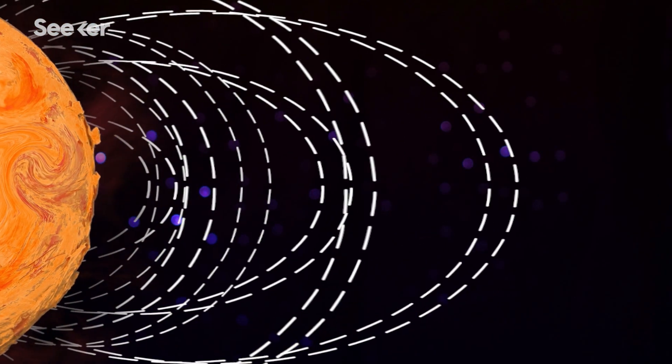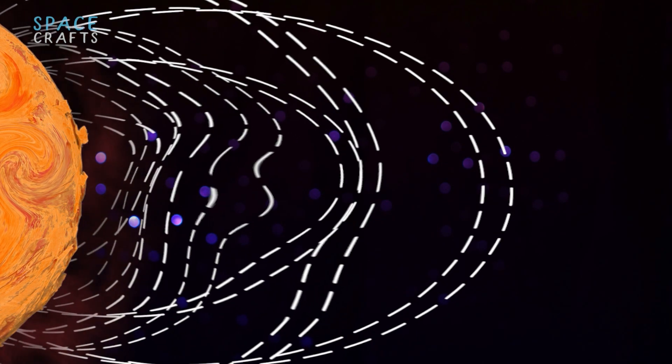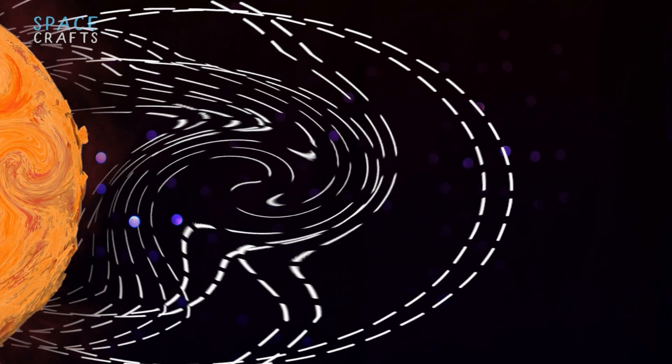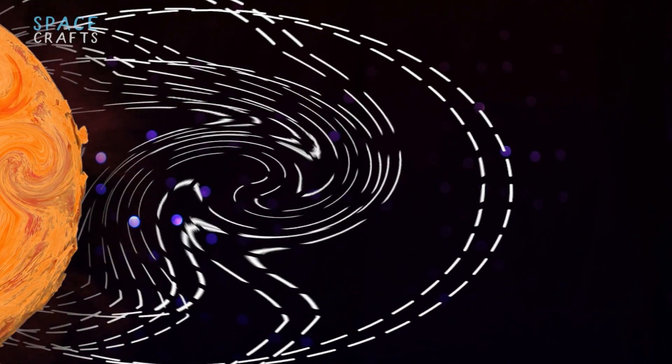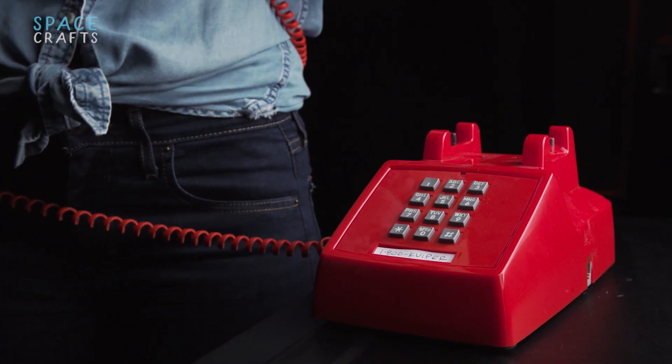The sun is basically a giant ball of gas that's constantly dancing. When the sun gets a little too excited, it twists its magnetic field too far, which causes it to kink. Remember when phones had cords and they'd get all tangled when you walk and talk? It's kind of like that.